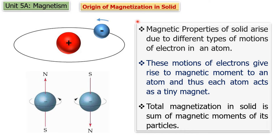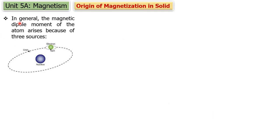So magnetization in solid is due to different motions of charged particles inside it, which gives rise to magnetic moment in the solid. In general, the magnetic dipole moment of an atom arises because of three sources. We said that inside the solid, each atom has a magnetic moment, and this magnetic moment is due to three types of motions.